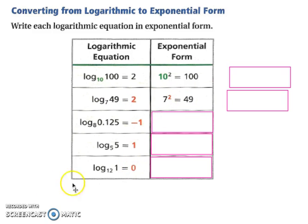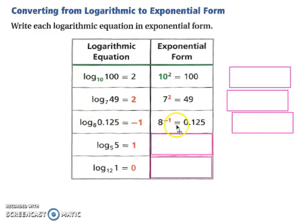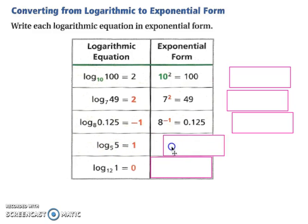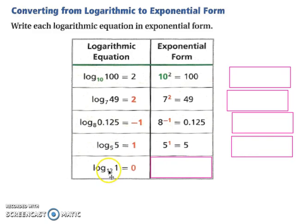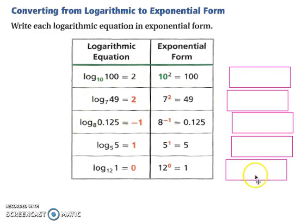Try the next three on your own, and then we'll see how close you came. This one would be 8 to the negative 1 equals 0.125. For this one, we'd have a base of 5, so 5 to the 1 equals 5. And for the last one, we would have 12 to the 0 equals 1.